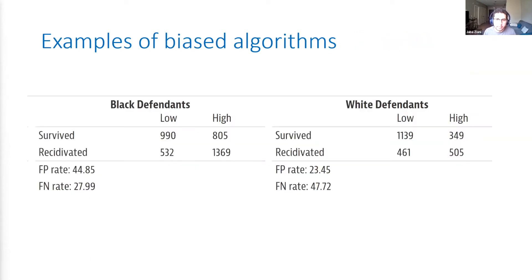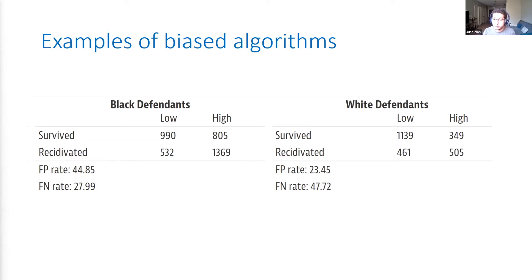More generally, their statistical analysis showed a huge difference in false positive and false negative rates across groups. The probability that someone who's not going to recidivate is given no bail was found to be much higher — almost 45% — in the Black population rather than the white population. Black defendants were much more likely to be predicted high-risk when they were not going to recidivate, while white defendants were much more likely to be claimed low-risk and then recidivate. So it seems like there is a fairness issue coming out of this algorithm.